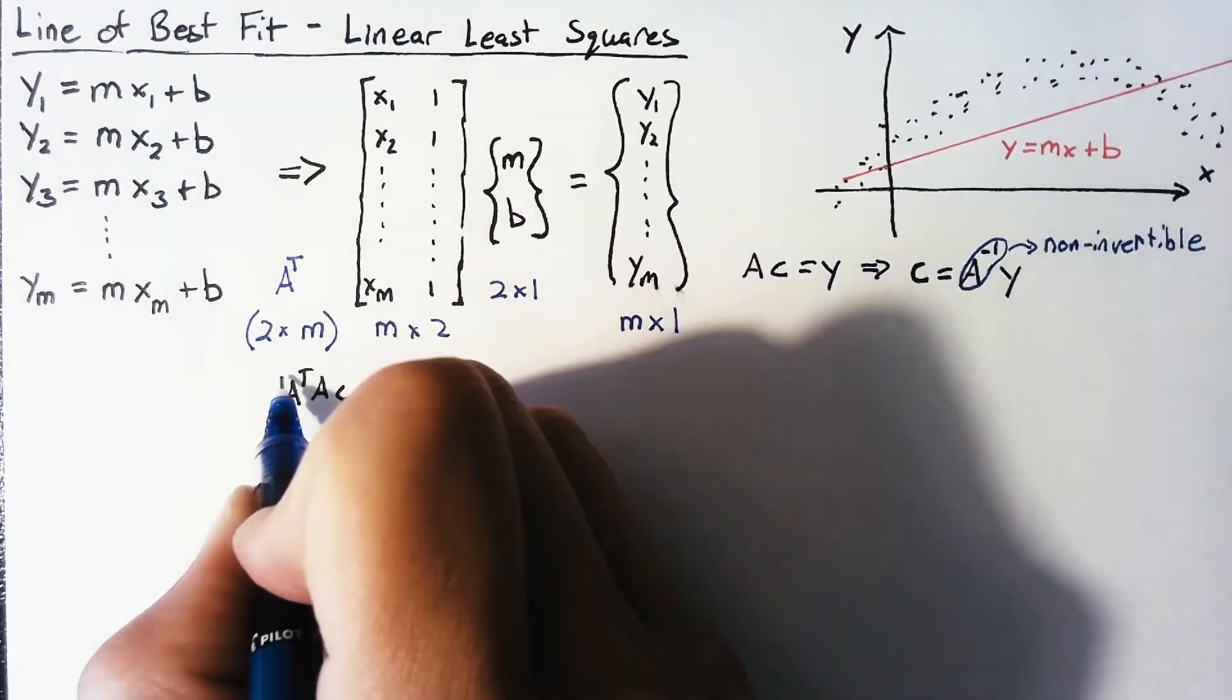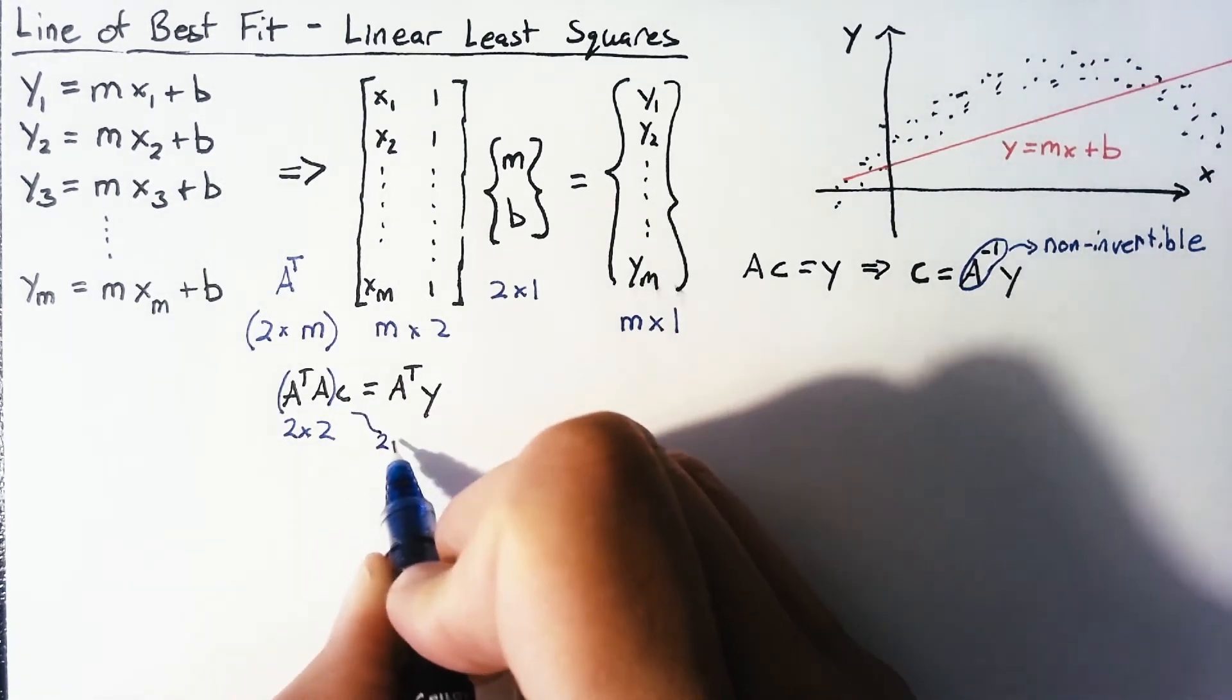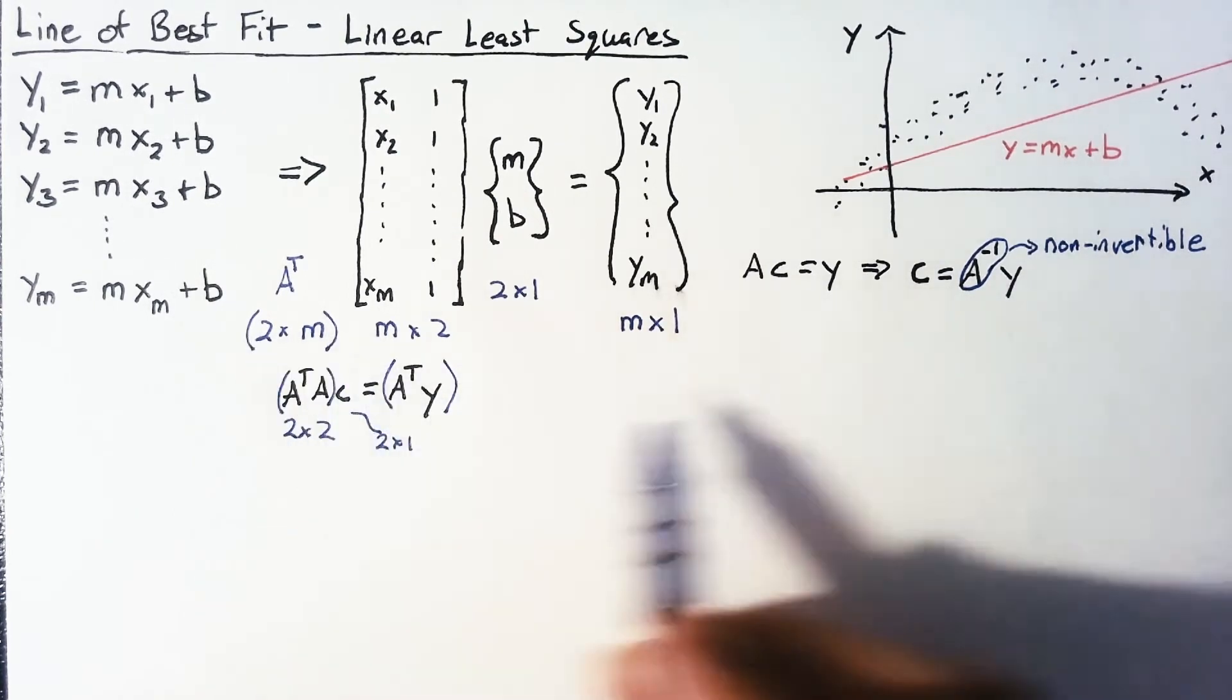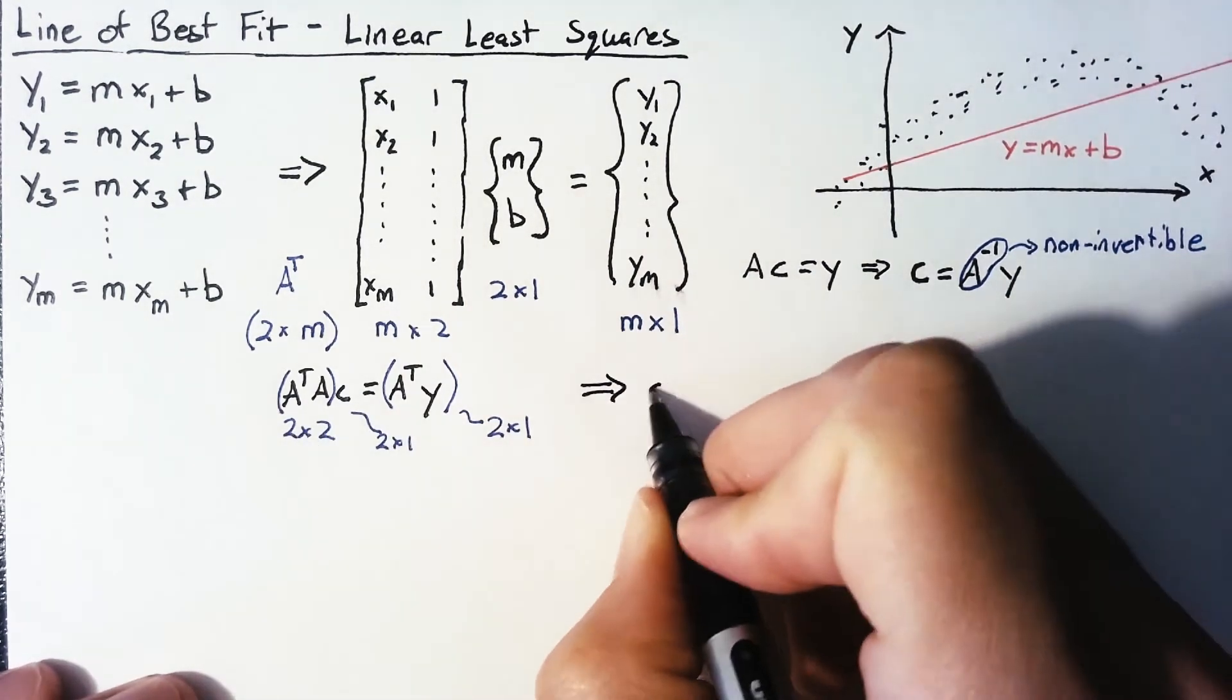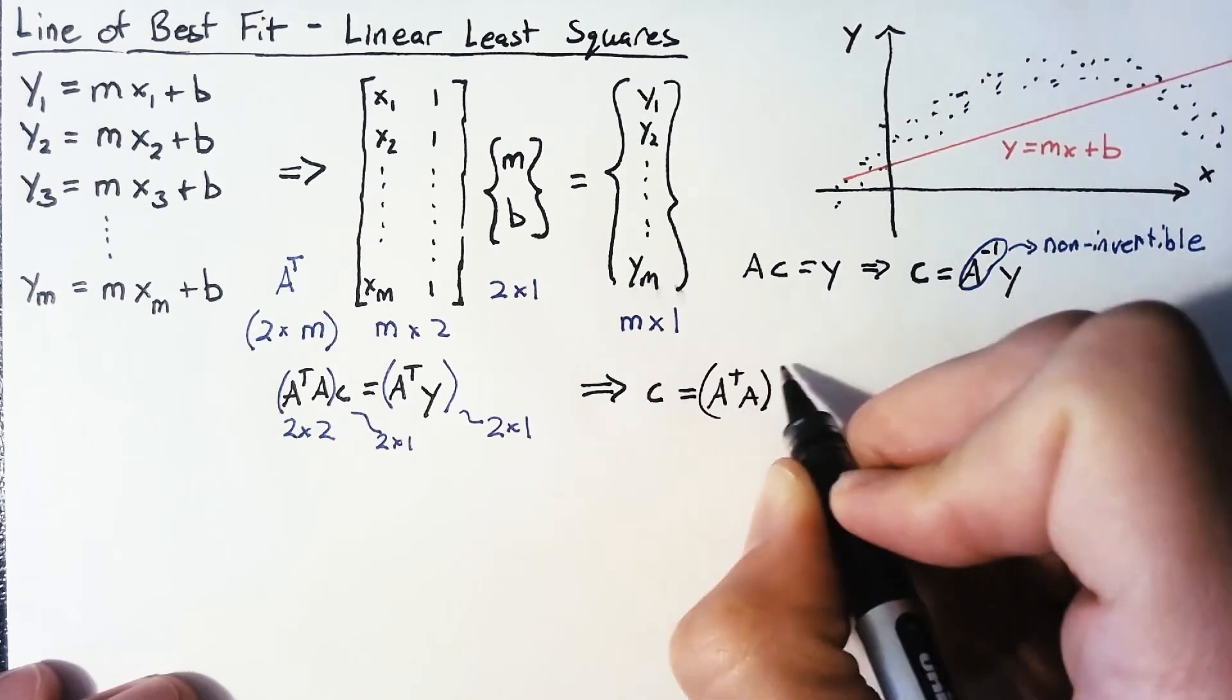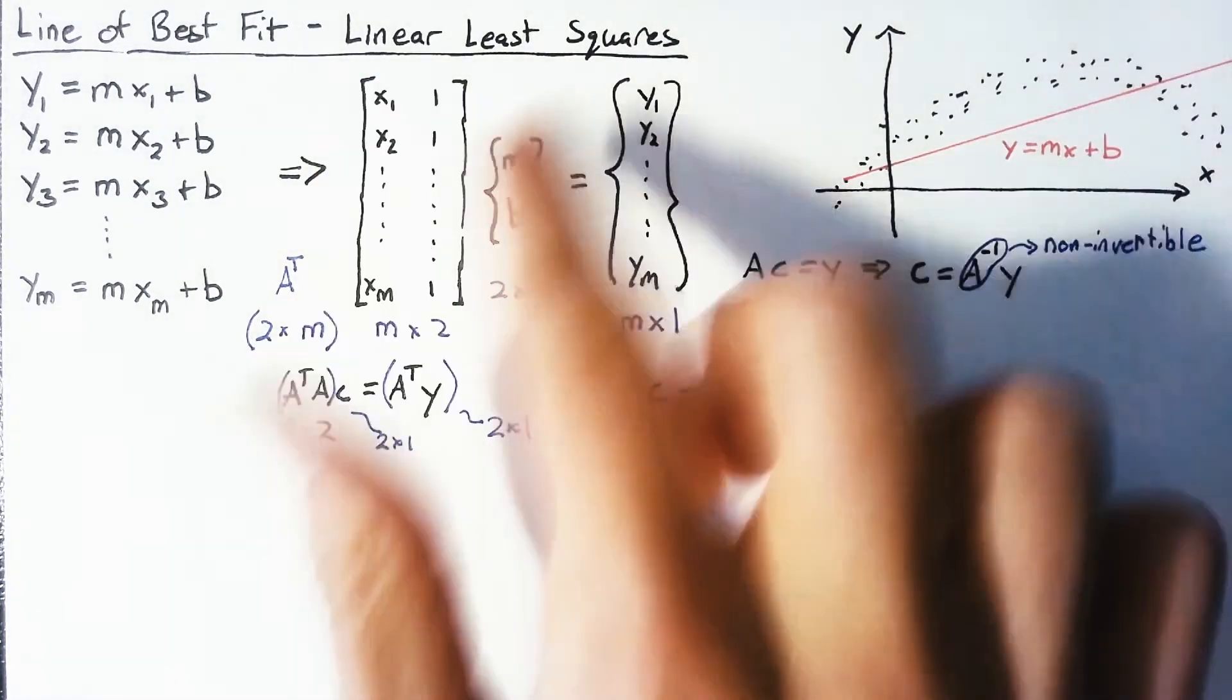So what we get from this is a two by two matrix here, which is invertible multiplied by a two by one. And then whenever we perform this multiplication, we have our two by m multiplied by an m by one. So this is also going to be a two by one vector. So now that this piece is invertible, it becomes very easy to go ahead and say that our C is going to be equal to A transpose A inverse multiplied by A transpose Y. And this is our solution for the linear least squares problem.